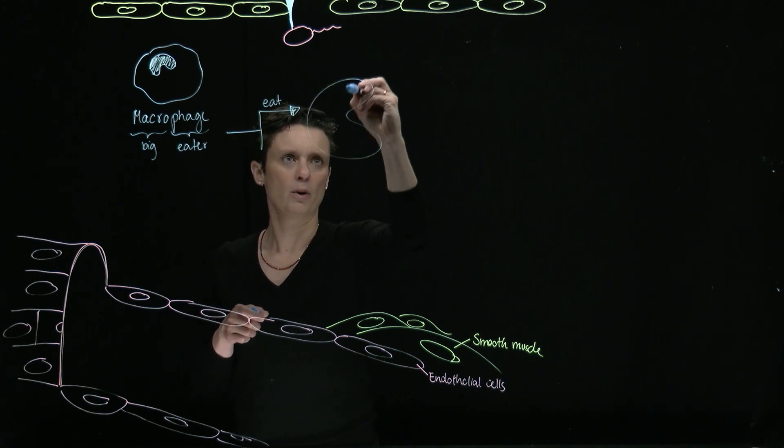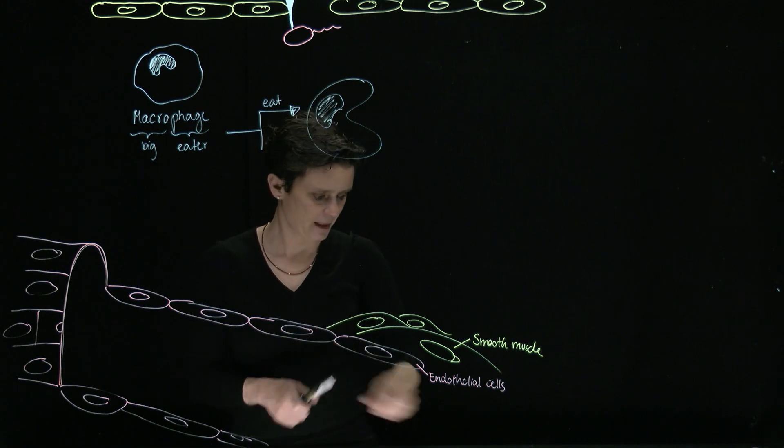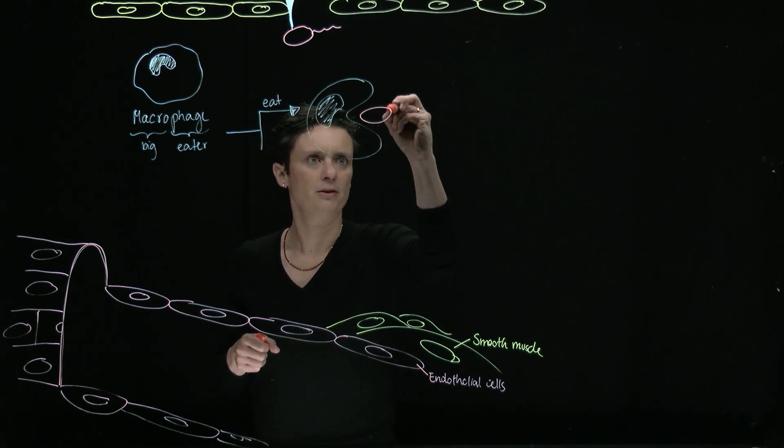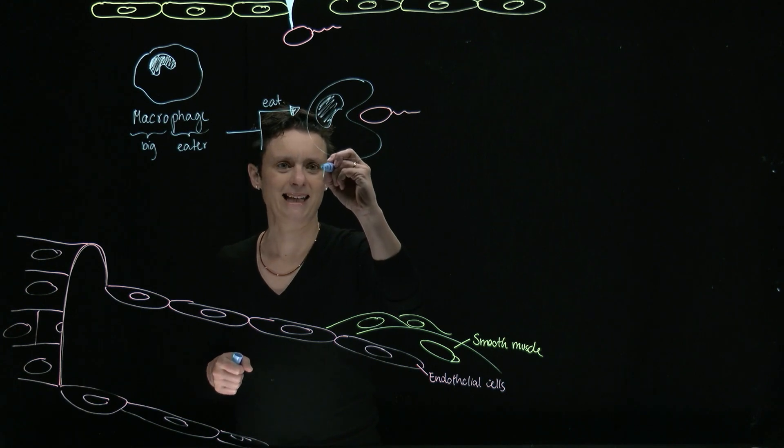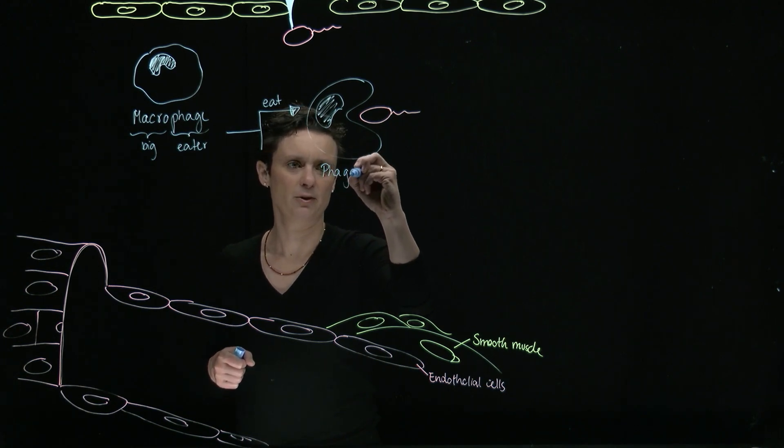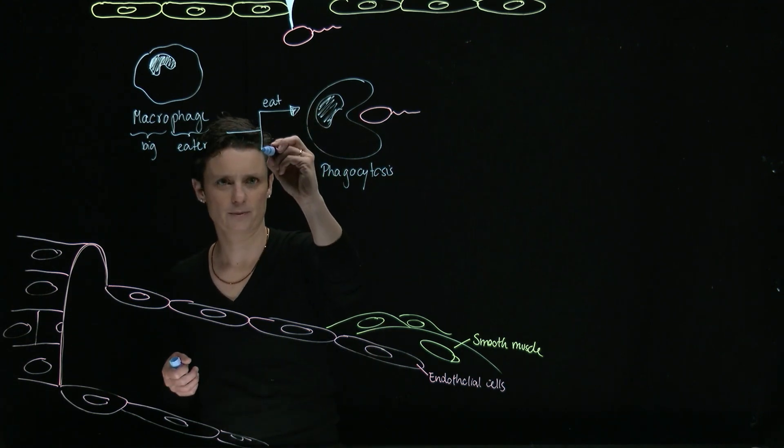The macrophage will kind of engulf the bacteria and eat it up. So that's kind of the mouth of the macrophage, and the bacteria goes in it, engulfs it, and eats it up by phagocytosis. So that's one thing that the macrophage is going to do.